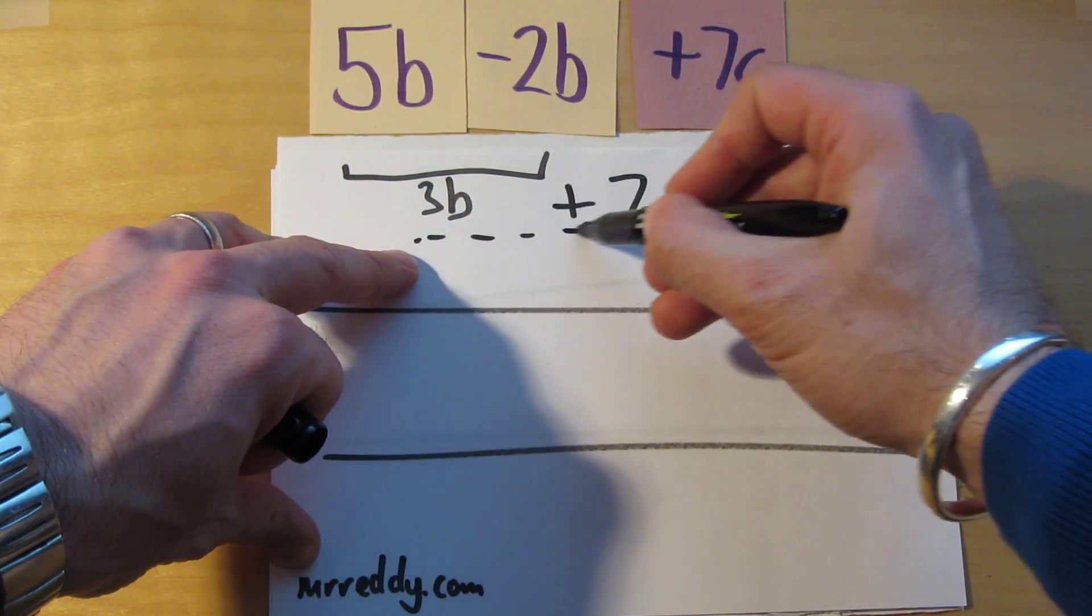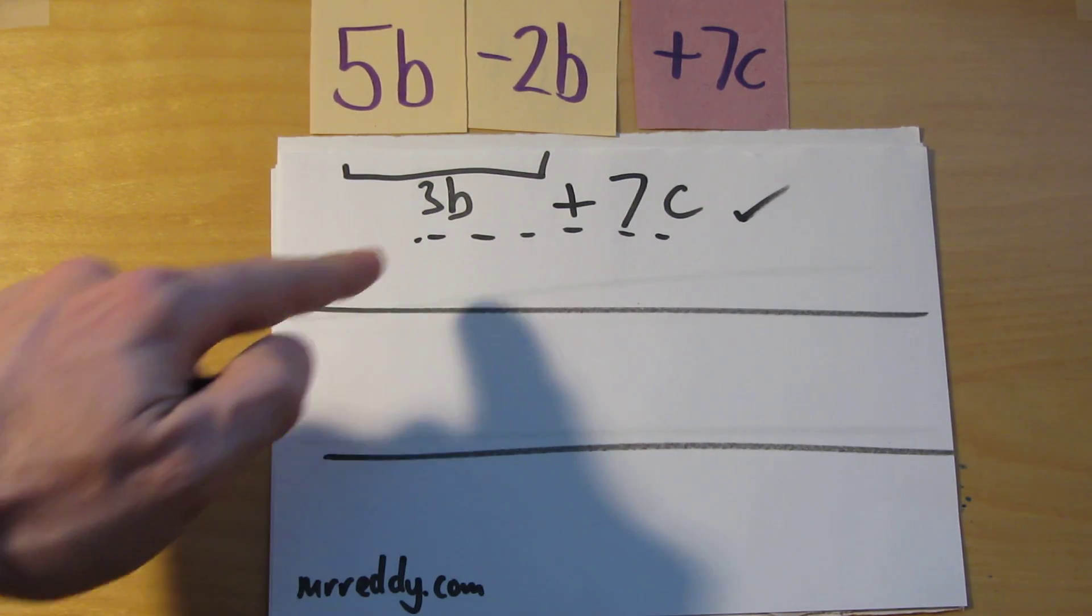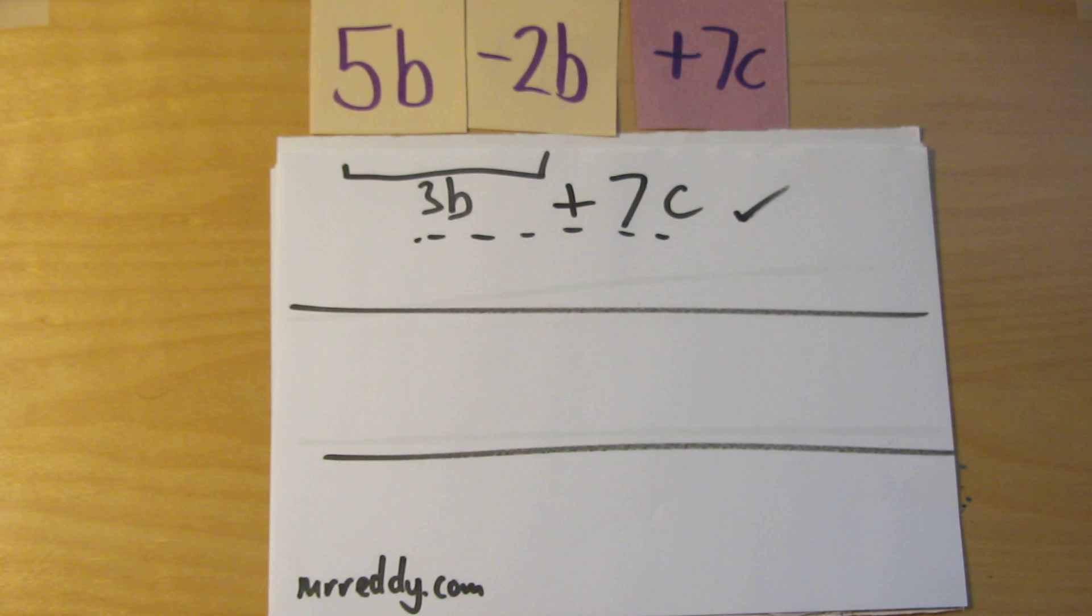3b plus 7c is your final answer. You can't simplify any more than that. The b's and the c's remain completely separate because b has one value, c has another value and you have to leave them separate like that.